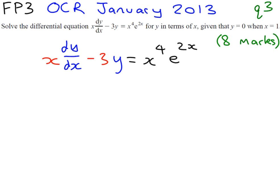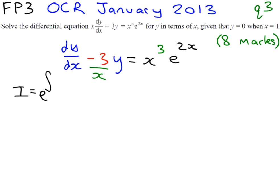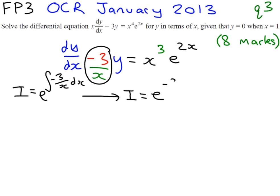The trick to do this is called the integrating factor. Before we can use that, we have to make sure the coefficient of dy/dx is just 1. So we divide the whole equation by x first, and we get minus 3 over x. Now we can find our integrating factor by computing e to the integral of minus 3 over x, which gives e to minus 3 ln x. Using laws of logs, we bring the power of minus 3 to the x, and since e and ln are inverses, we just get x to the minus 3.